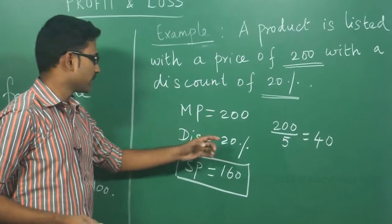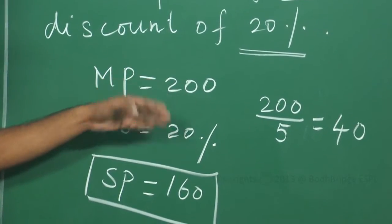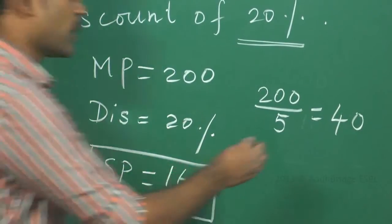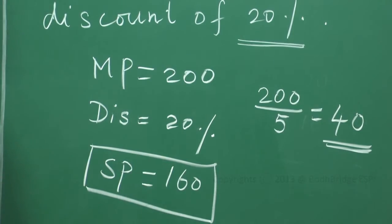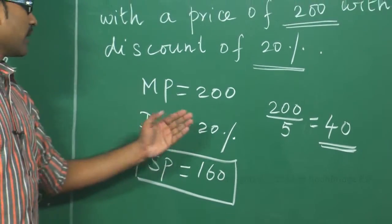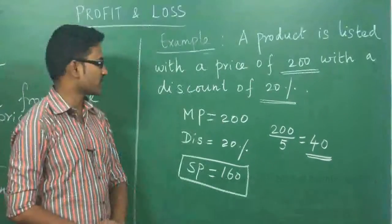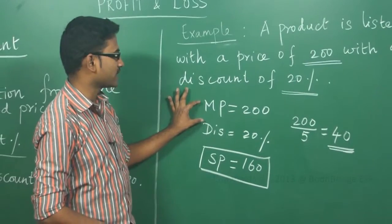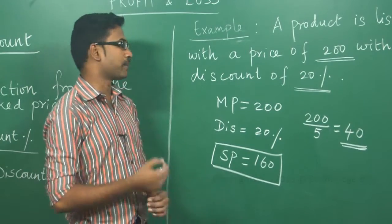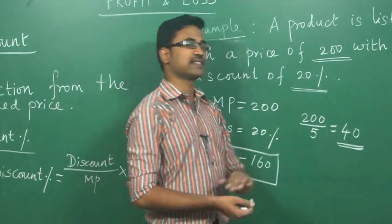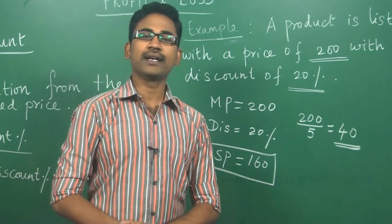To summarize: 200 is the market price, the discount percentage is 20%, and 20 percentage of 200 is 40 rupees — that is the discounted amount, the reduction from the market price. So you are paying only 160 rupees. The amount you pay at last is called the selling price, and 40 rupees is the discounted amount. This is about discount and discount percentage.